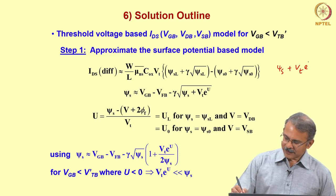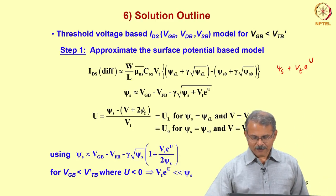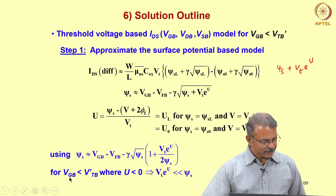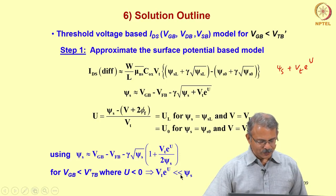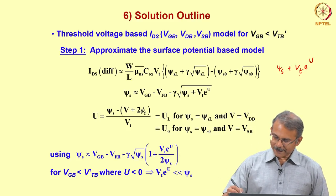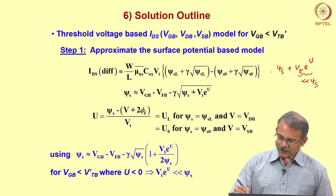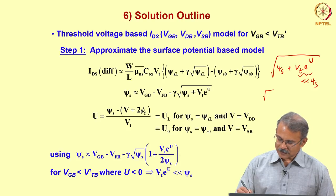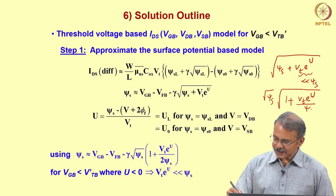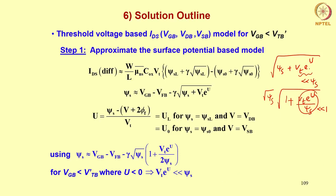So ψs + Vt·e^u: in weak inversion, u is less than 0 when Vgb < Vdb, meaning ψs < V + 2φf. Therefore u is negative, and the exponential of a negative quantity is less than 1, so Vt·e^u is much less than ψs. I can therefore take √ψs out and write √(ψs + Vt·e^u) ≈ √ψs · (1 + Vt·e^u / ψs)^(1/2). Using the Taylor series approximation √(1+x) ≈ 1 + x/2, this becomes √ψs · (1 + Vt·e^u / (2ψs)).